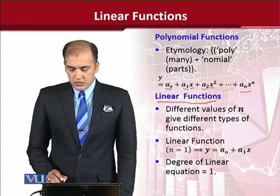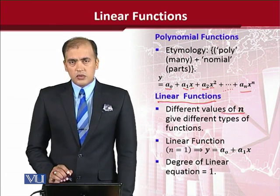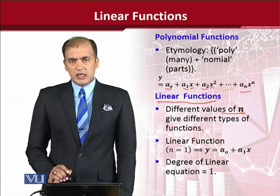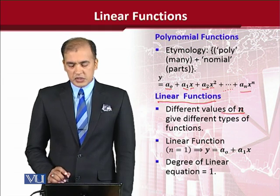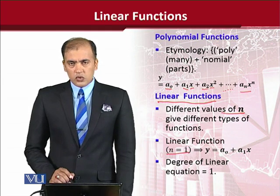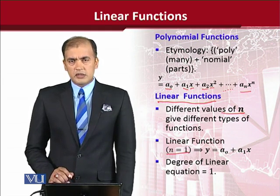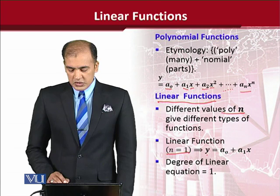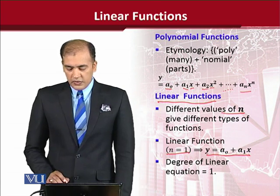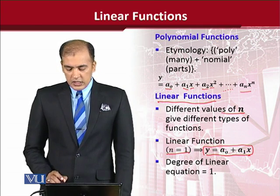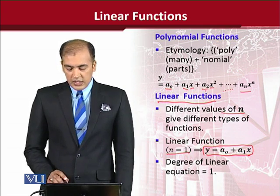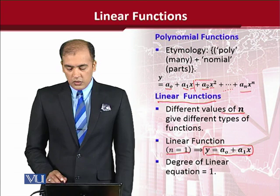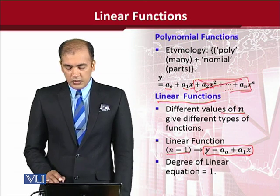As I have told you that putting the value of a certain thing, that is n, we can get various types of functions. So in this case n is equal to 1. When we put 1 in place of n we get a linear function and the whole polynomial function gets reduced to this expression only because the maximum value of n is now 1 and all of this part will not be included.